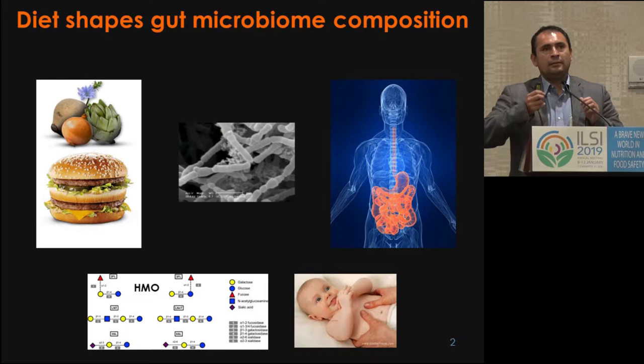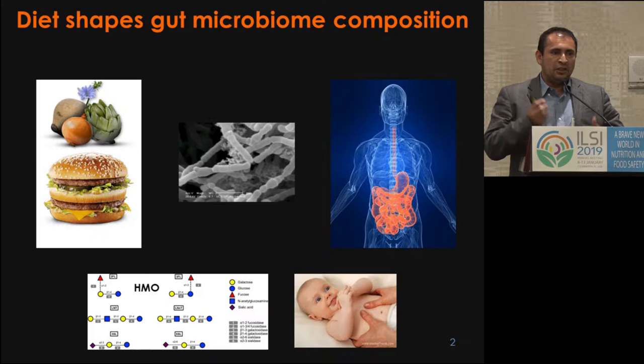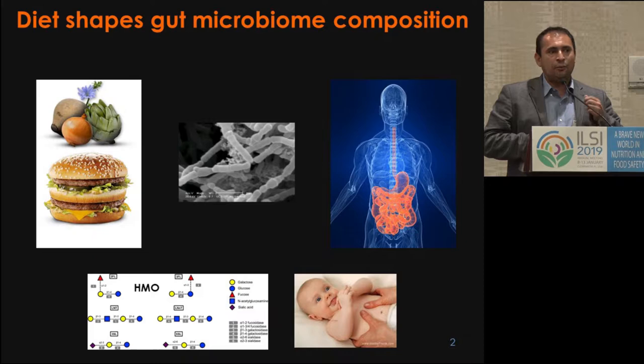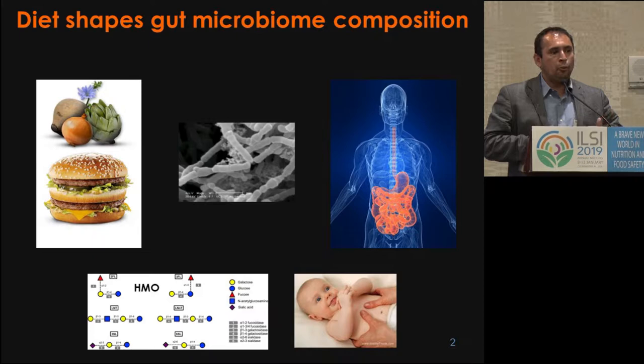Diet is one of the main factors guiding our gut microbiome composition, transition, and diversity. High-fiber diets are usually associated with great health and prebiotics, while diets poor in carbohydrates are usually associated with poor health and aberrant microbiomes. Diet is one of the best ways to improve our health through our gut microbiome, and there's much we now know with the revolution of gut microbiome research.